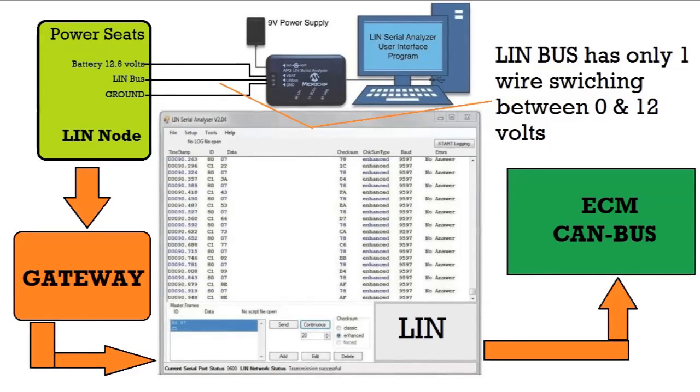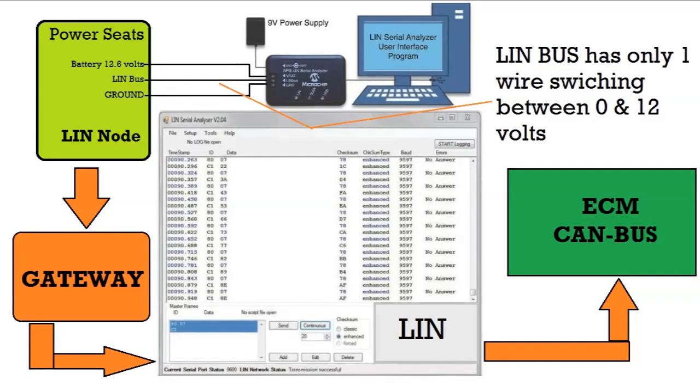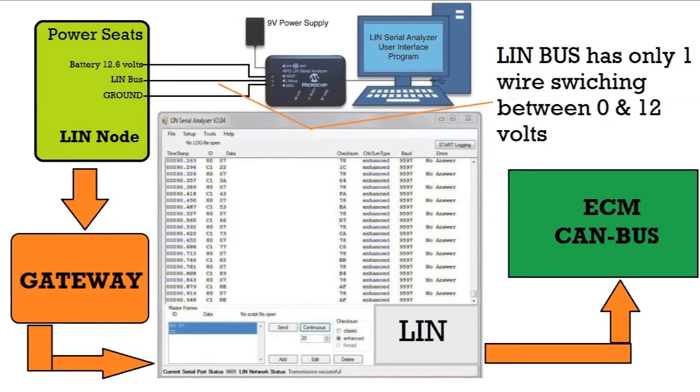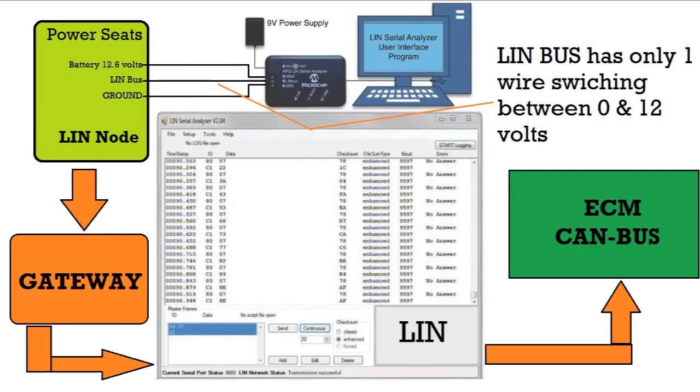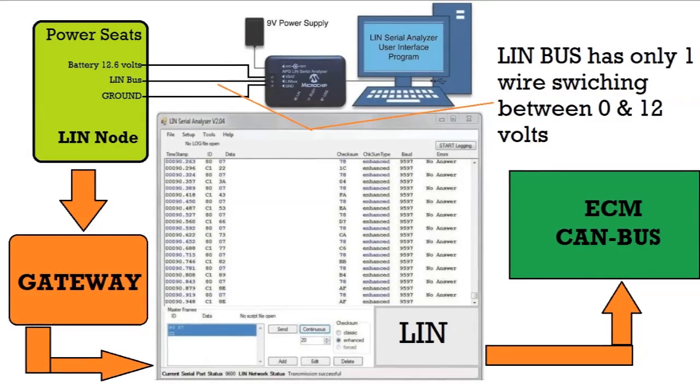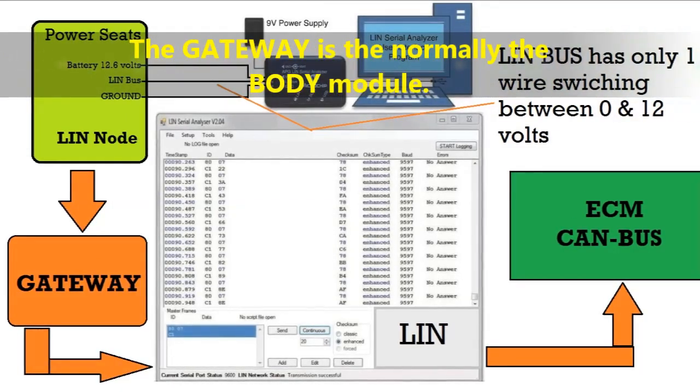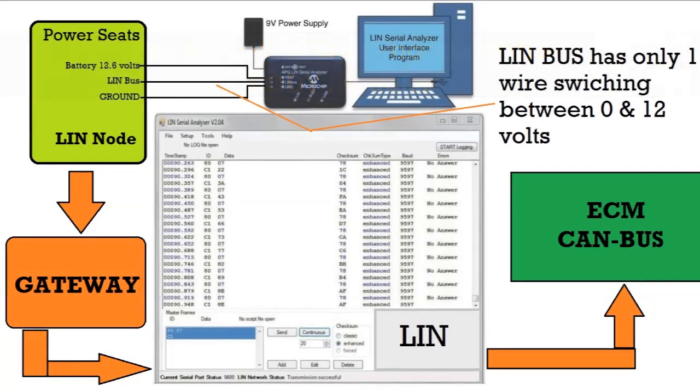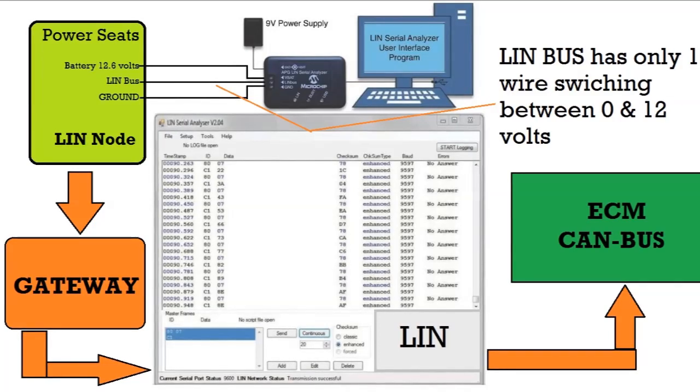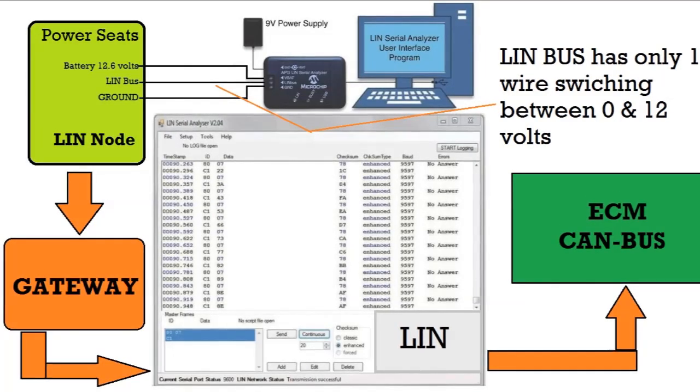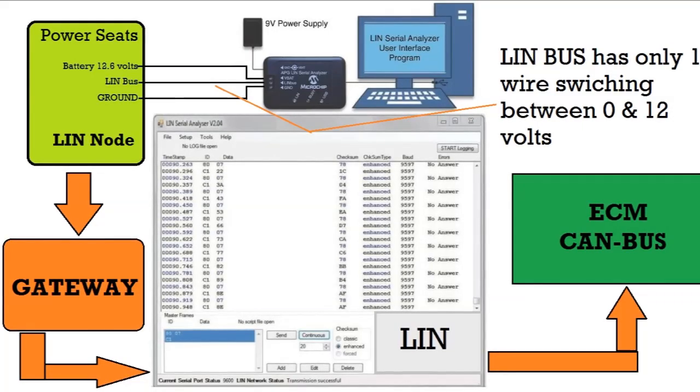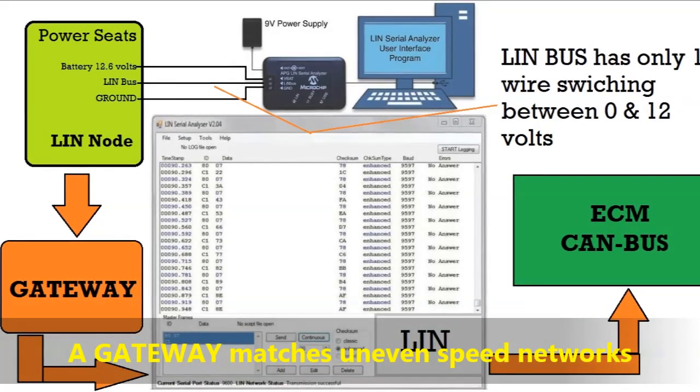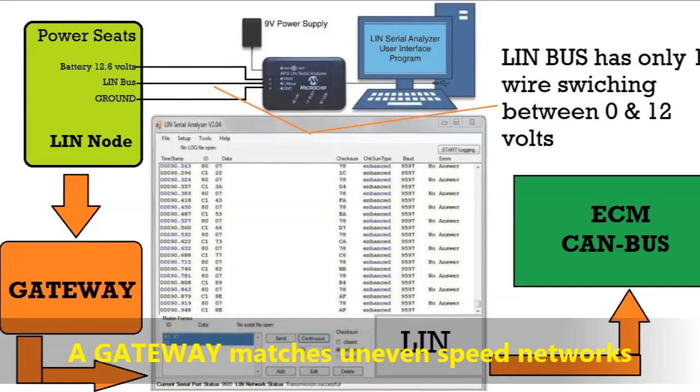Now, LIN and CAN are joined together because LIN is slower. CAN is faster, sometimes a lot faster depending on the CAN that you have, depending on the year of your vehicle in question. And so you match the two together through a gateway. A gateway computer, usually not always but usually is the body module. The body computer is the gateway, and this is what actually matches the two uneven speed networks. It also serves in many cars as the body module. So that's pretty much important to understand what it does.